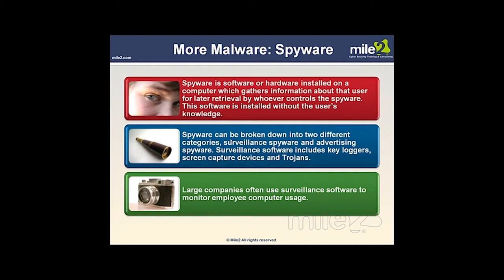Spyware is software or hardware installed on a computer that gathers information about you, and the bad guy could later retrieve this information without your knowledge. Spyware can come in hardware but is often software, and can be broken down into surveillance spyware and advertising spyware. It's important to keep security software up to date and scan for these things. There's even surveillance software used to monitor employees' computer usage. Some people even cover their webcams — it's come out in the news that the FBI was able to turn on webcams without the indicator light coming on.